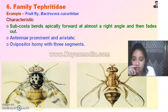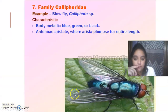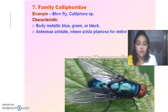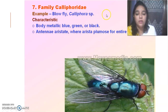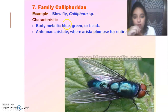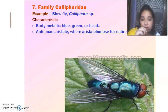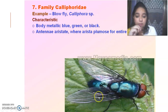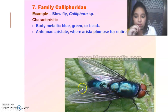Then we have Calliphoridae — the blow fly. It is metallic blue-greenish in color — you will see a light blue fly. This is an interesting fly and does a lot of work in forensics, which we will discuss in detail later.